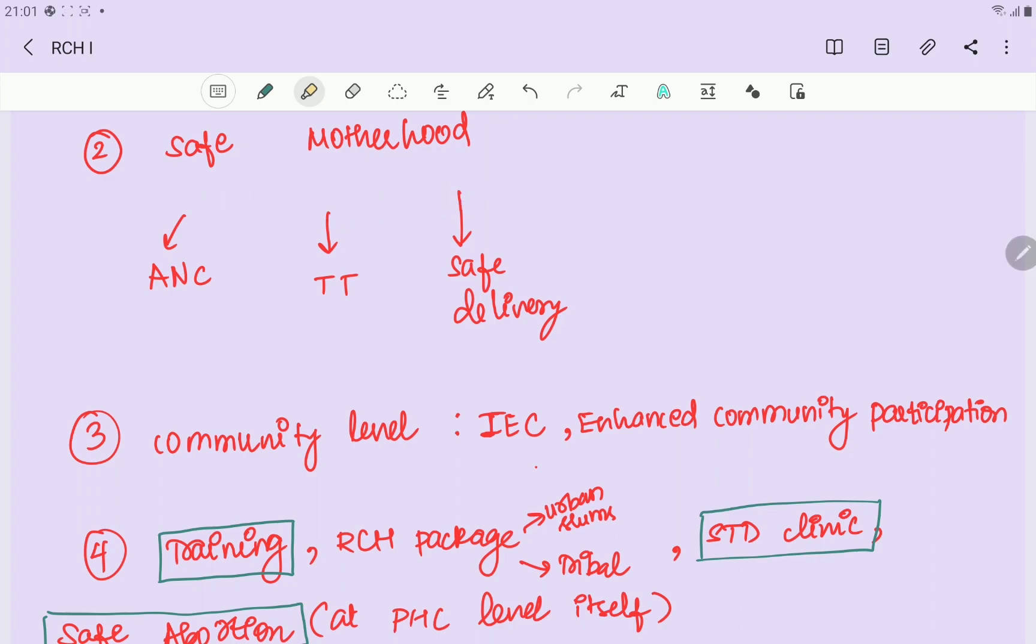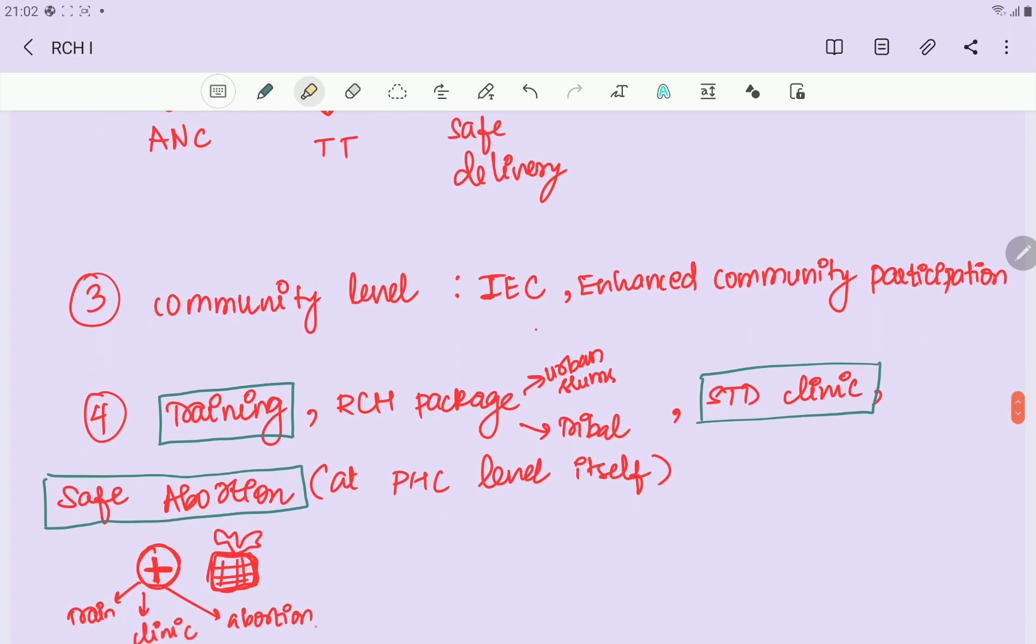Next batch is safe motherhood. If you don't have motherhood, you will take ANC - antenatal care. What do you do with antenatal care? You can take a TT injection, then safe delivery. Next is IEC activity - Information, Education, and Communication. Enhanced community participation via NGOs, women participation, etc.